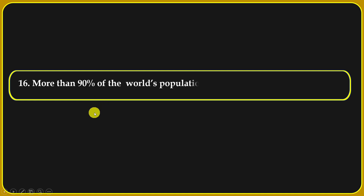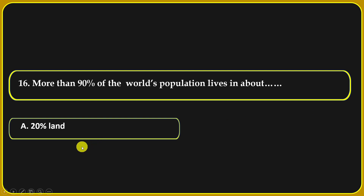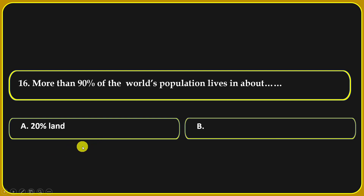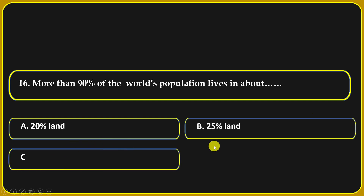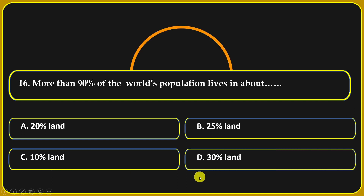More than 90 percent of the world's population lives in about: 20 percent of land, 25 percent of land, 10 percent of land, or 30 percent of land.